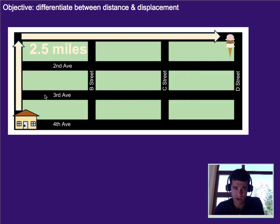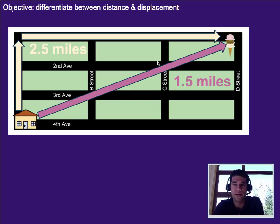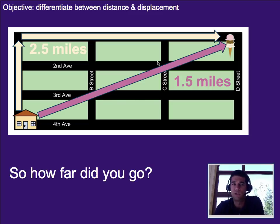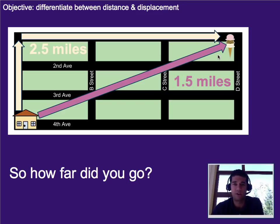Now we could talk about that as how far you went, but somebody else might say: what if you just looked at the shortest distance — how far it is from your home to the ice cream store in a direct line path? And that's only one and a half miles. So then the question becomes, how far did you go? Even if you walked 2.5 miles, is that how far you went, or does the one and a half miles count for how far you went?